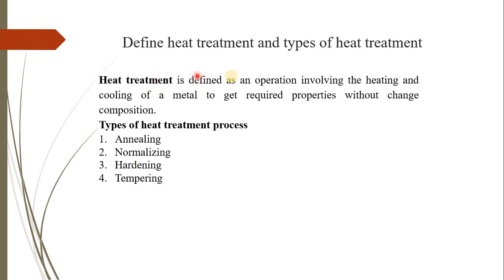Next question: define heat treatment and types of heat treatment. Heat treatment is the heating and cooling of metal. When you heat and cool a metal, its properties change — it changes the composition. The types are annealing, normalizing, hardening, and tempering. This is your final question in the question paper.